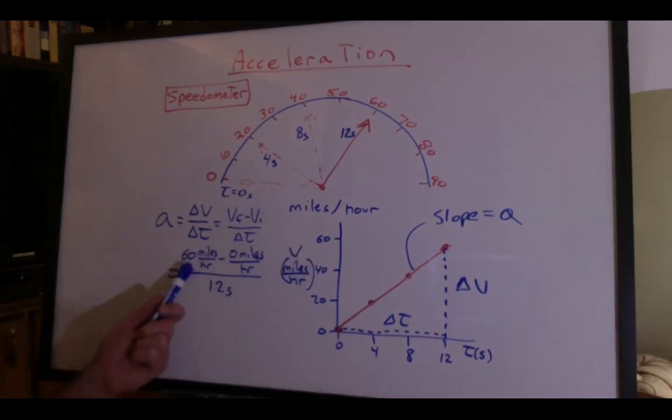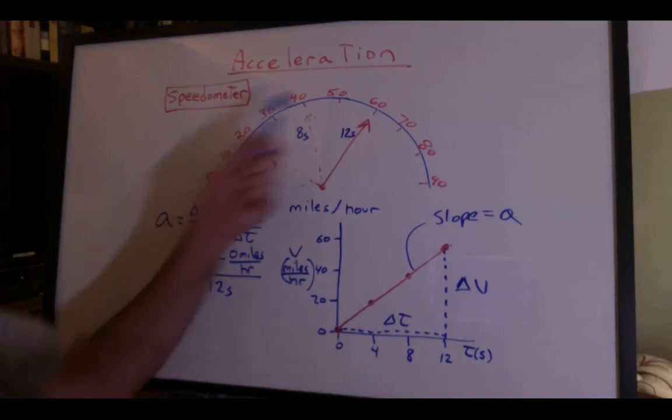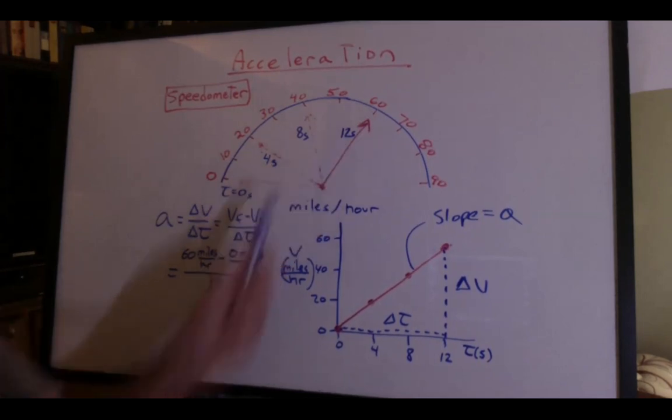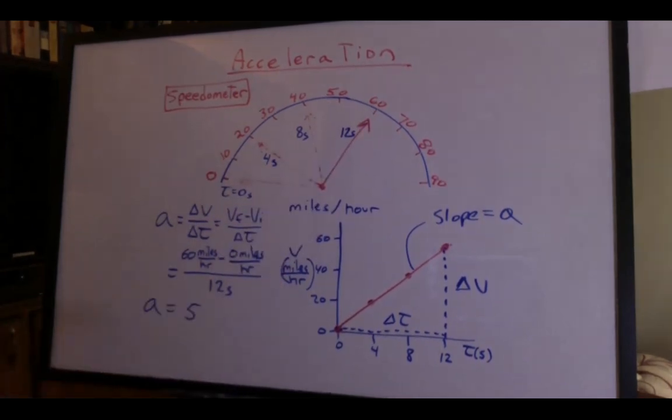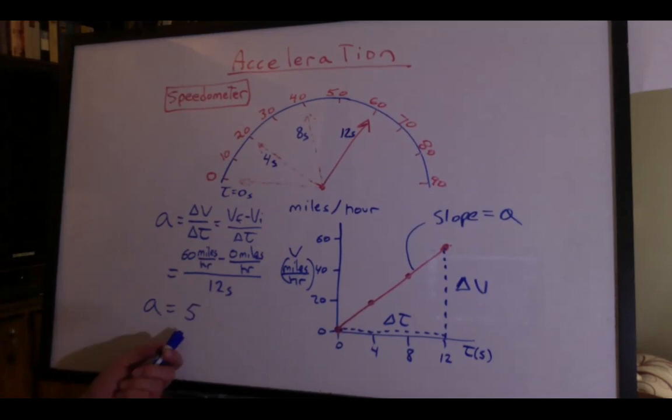We have 60 miles an hour minus zero miles an hour over 12 seconds. All we're saying is that we've gained 60 miles per hour in 12 seconds. We can say our acceleration is 5.